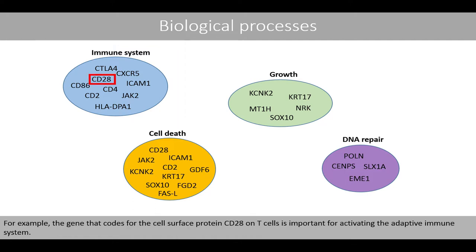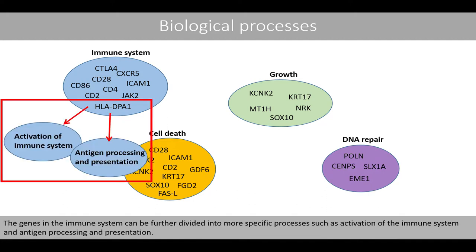For example, the gene that codes for the cell surface protein CD28 on T cells is important for activating the adaptive immune system. The genes in the immune system can be further divided into more specific processes such as activation of the immune system and antigen processing and presentation.